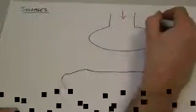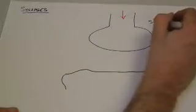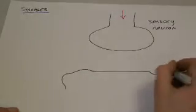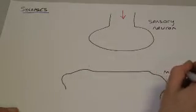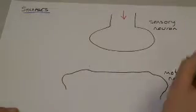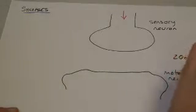This is synapses. A synapse is the gap between two neuron cells. Neurons don't actually touch each other. So here we might have, for example, a sensory neuron, and this might be the next neuron, the motor neuron.